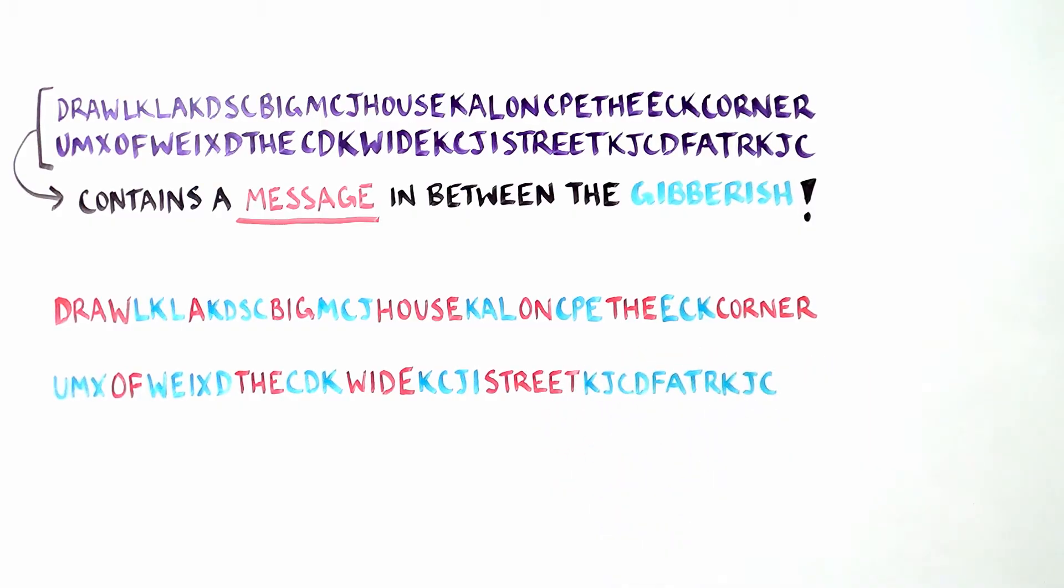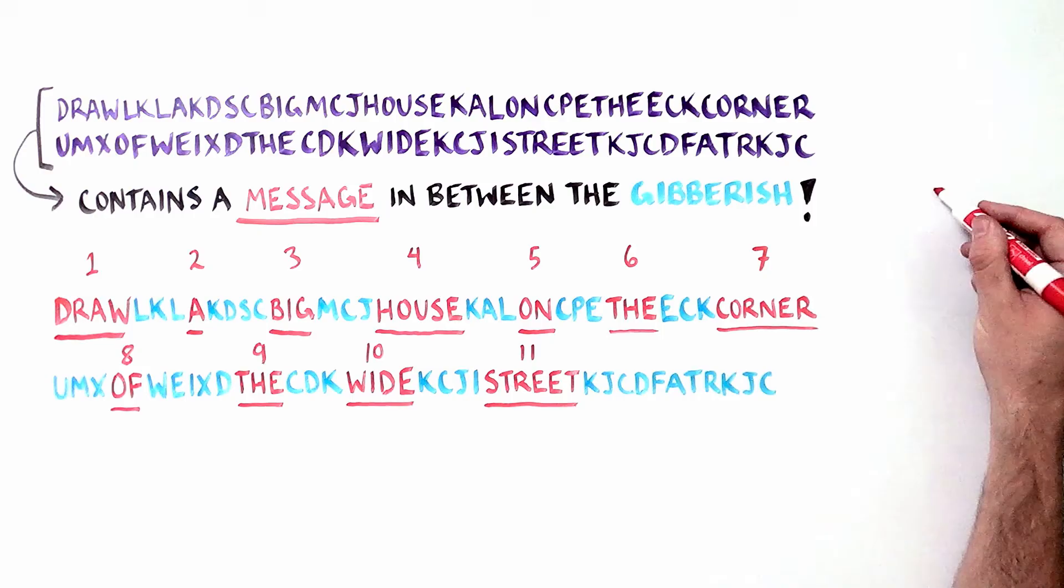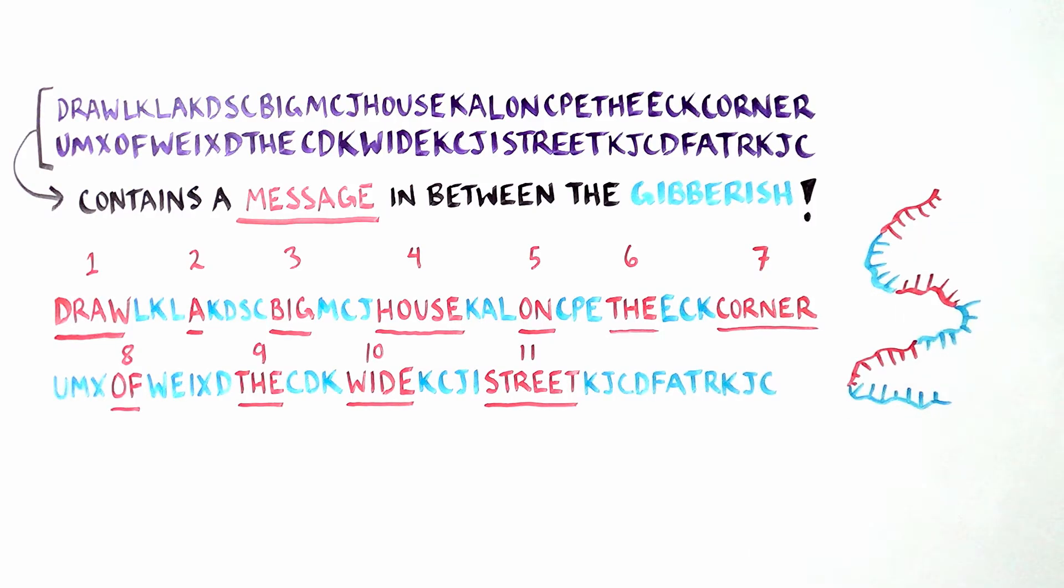The letters that are removed are called introns, and the remaining letters, the segments of the gene's message that encode a protein, are called exons.